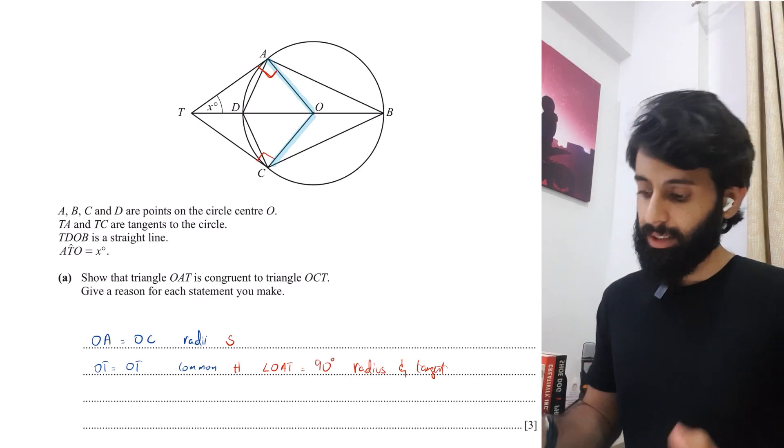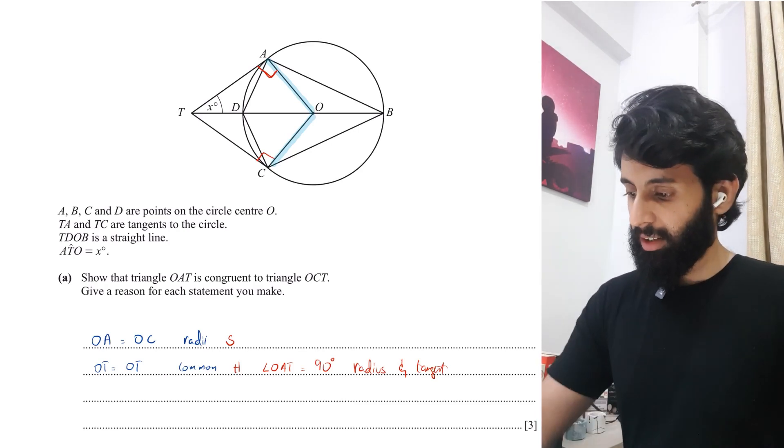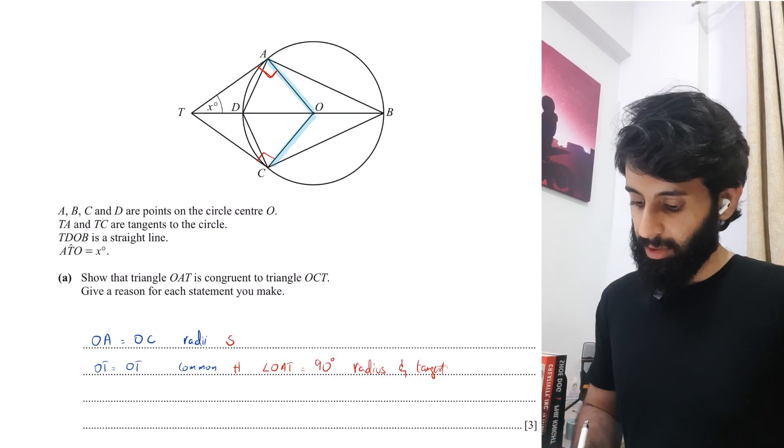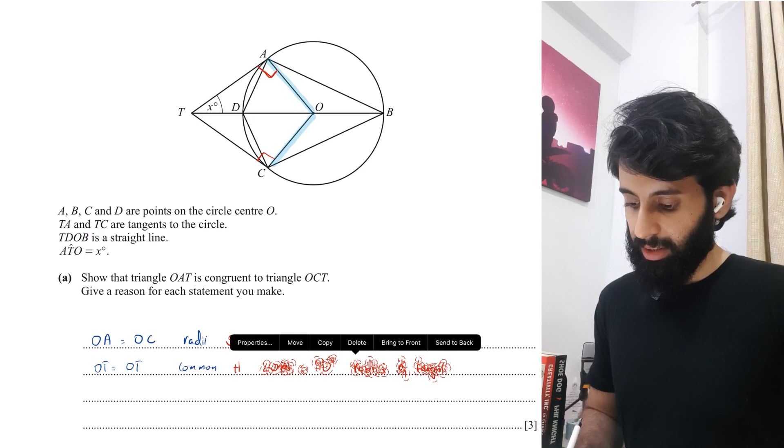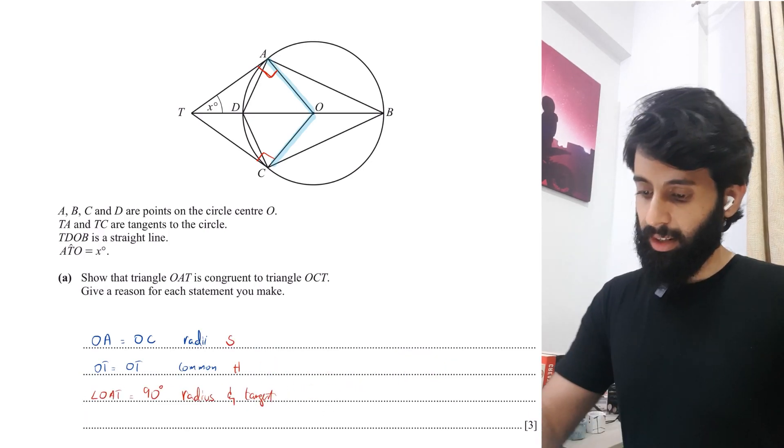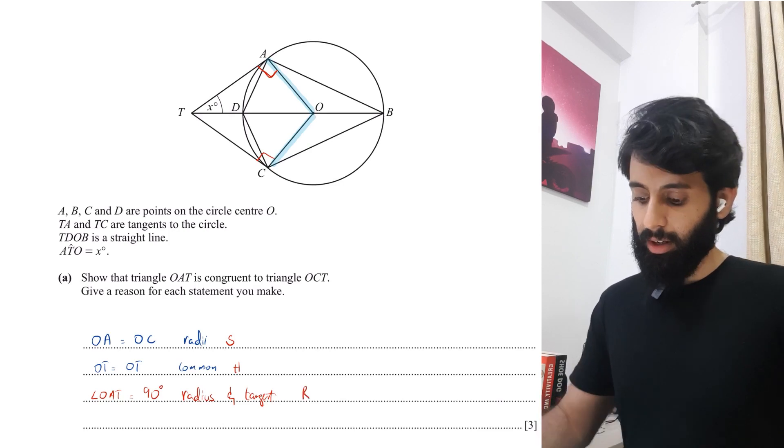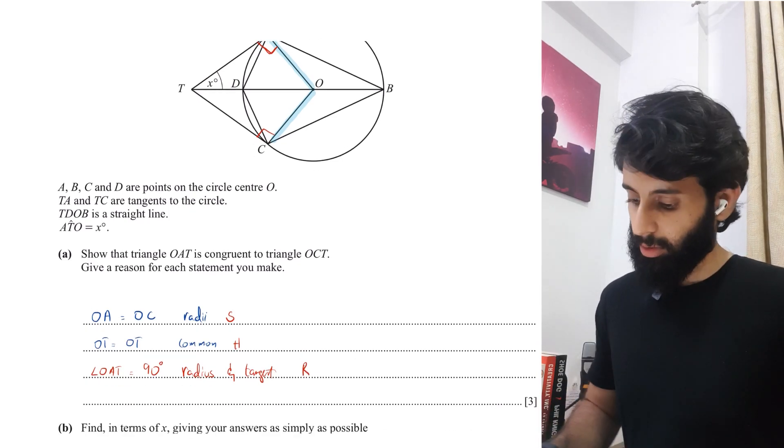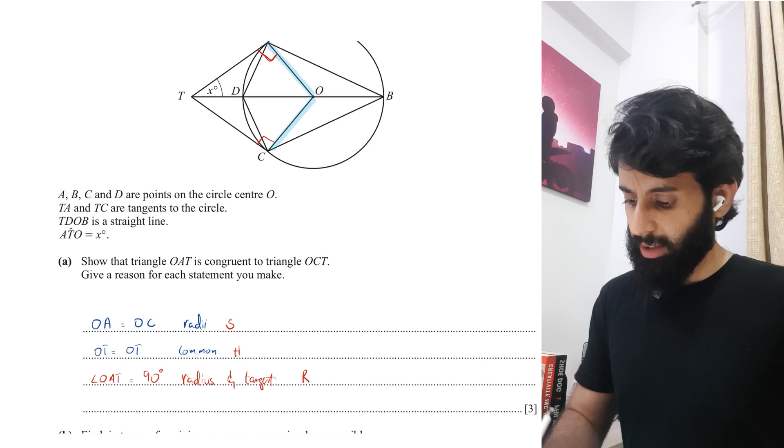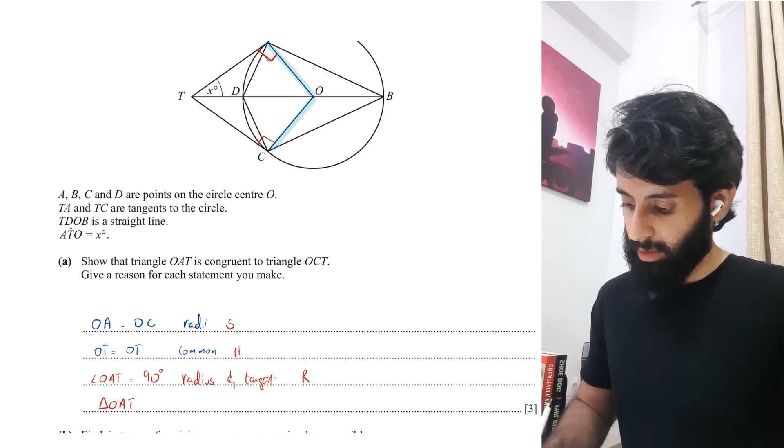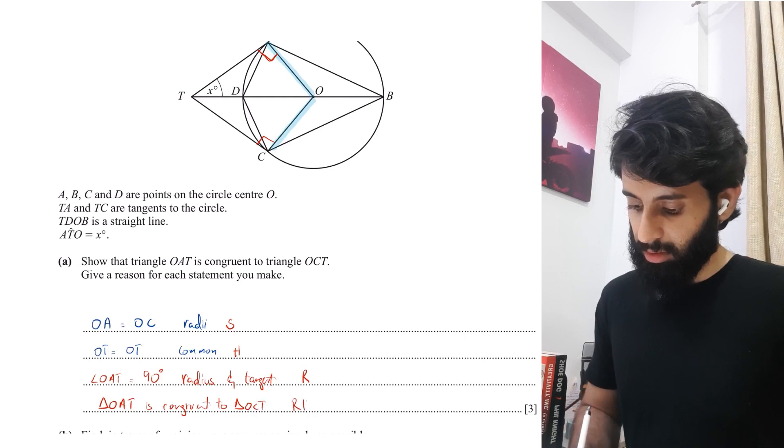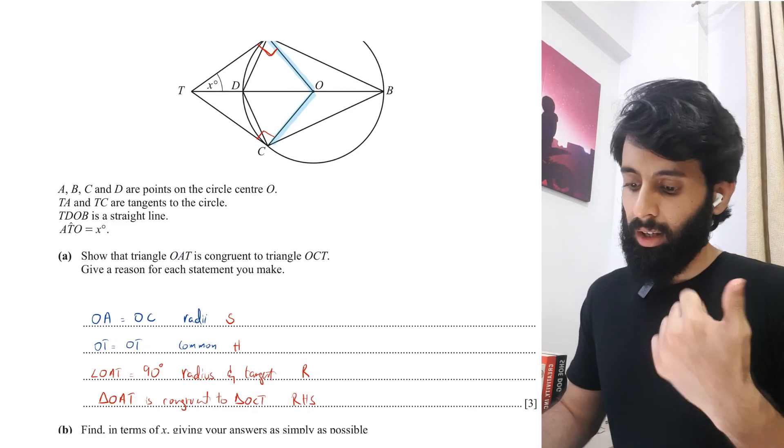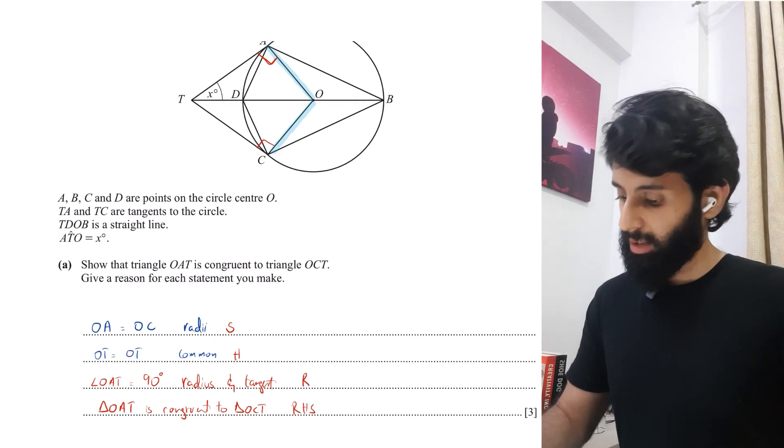Which means that this is the hypotenuse and OA equals OC is basically a side. And since I just mentioned that this angle is 90 degrees, this tells me that the two triangles are not just regular triangles. In fact, they are 90 degree triangles. So RHS is the property due to which they're congruent. Triangle OAT is congruent to triangle OCT. And the property is RHS. R for right, H for hypotenuse and S for side.